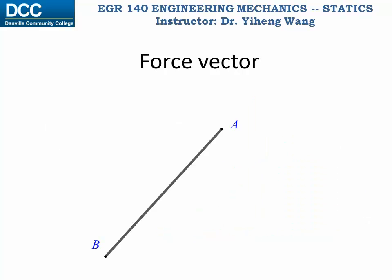We can also express force vectors as Cartesian vectors. For example, for the tension force F in a cable directed from point A to point B, we know that we can express it as its magnitude multiplied by a unit vector that describes its direction. Since the position vector from point A to point B has the same direction as the force, we can use the position vector RAB to find the unit vector UAB.